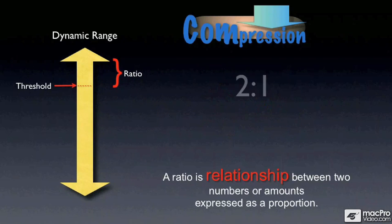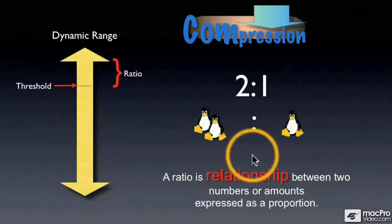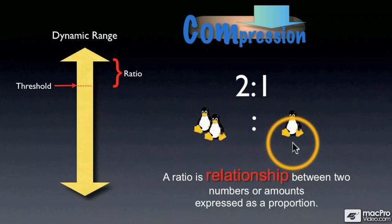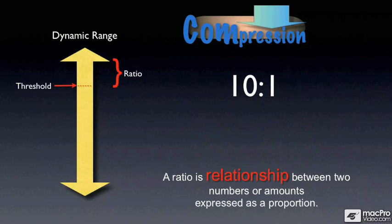For instance, a proportion of two to one. Proportions are really easy to understand when you're talking about penguins. Let's say we have an island of penguins, and on one side there are two penguins, and on the other side there's only one. That's a relationship or proportion of two to one.